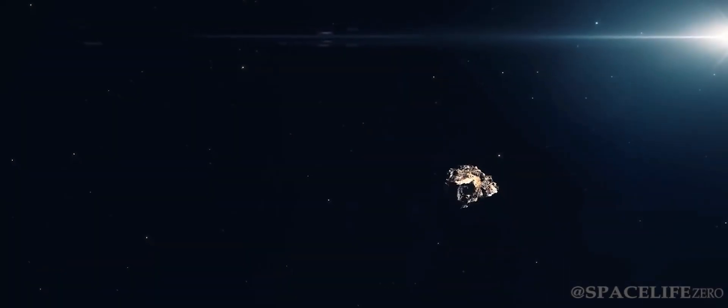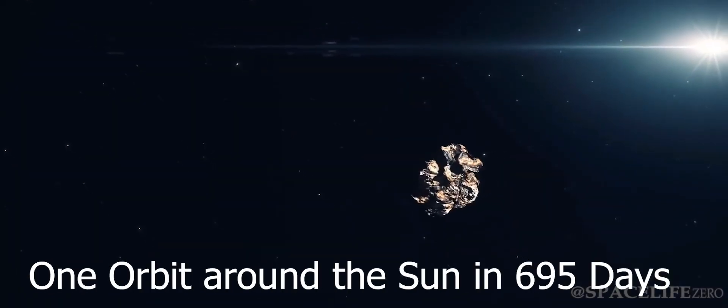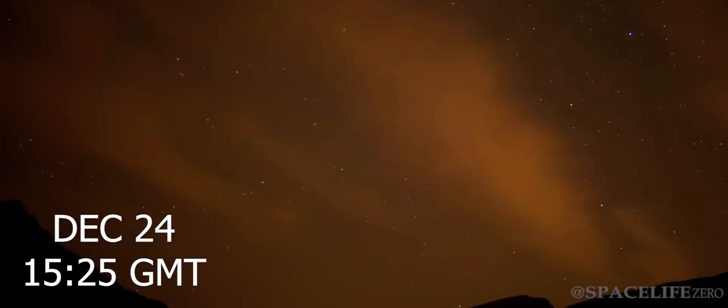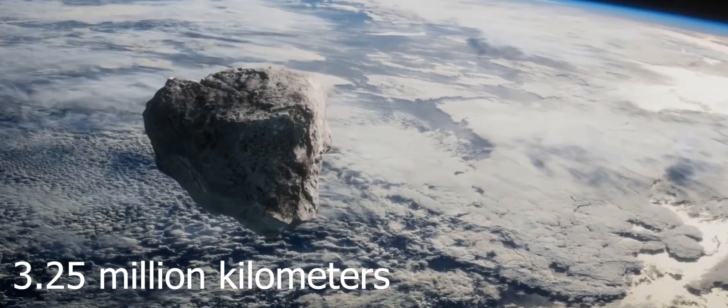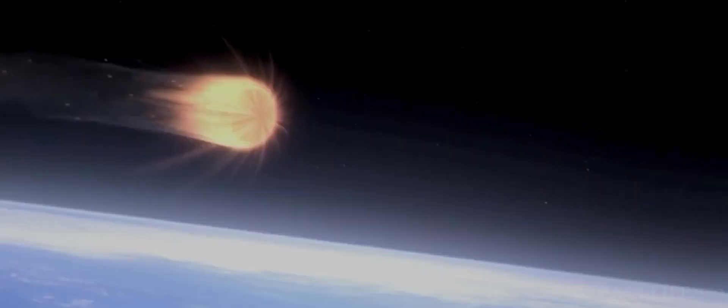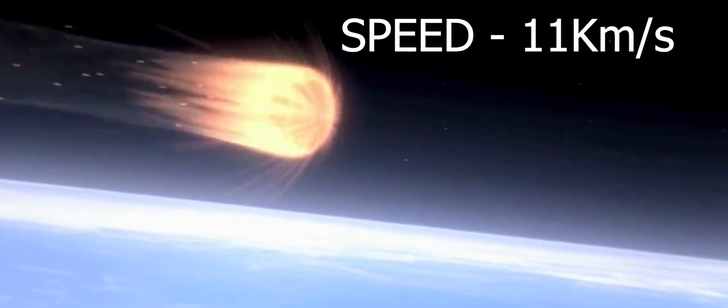It makes one orbit around the Sun in 695 days. On December 24 at 1525 GMT, it will fly past Earth at a close distance of 3.25 million kilometers at an incredible speed of 11 kilometers per second.